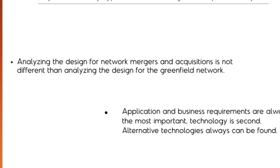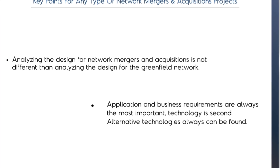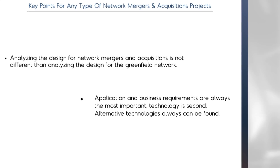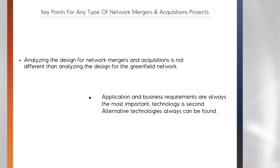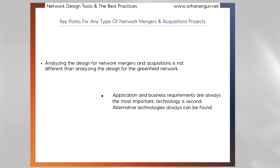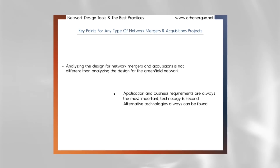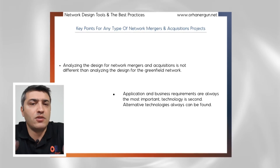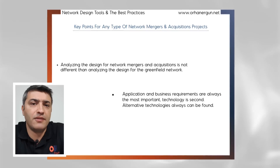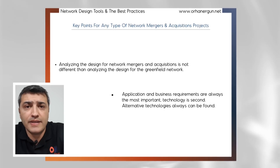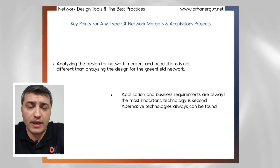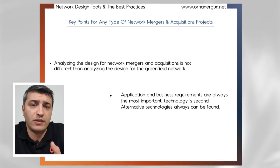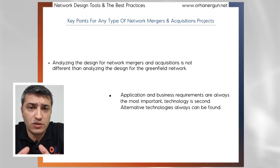Technologies and protocols are of second importance. The first and most important thing for merger and acquisition is the application — the application's expectation from the network. Low latency, for example, can be provided by using different technologies. Instead of MPLS you might have internet or a transport network; different transport networks can still provide low latency. But we need to think about the application and its requirements first.